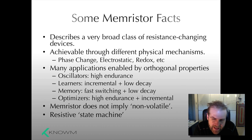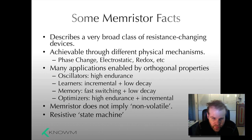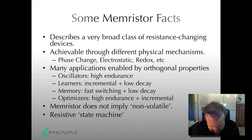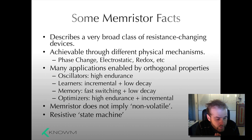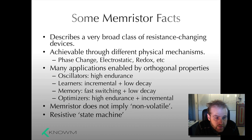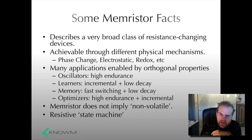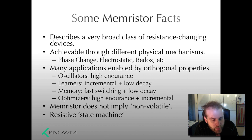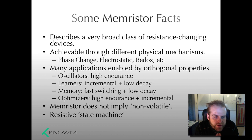There are a lot of applications enabled by Memristors with orthogonal properties. By orthogonal I mean it's very hard or perhaps impossible to achieve certain properties at the same time, and certain uses are radically different than others. Memristors can be applied to many different circuits, just like resistors, transistors, and capacitors. For example, there are oscillators you can make with Memristors. For that circuit to be practical, the Memristor has to have very high endurance — you have to be able to switch it many times. That can be a problem with some Memristors, especially if they're optimized for non-volatility, as they'll break after so many cycles.